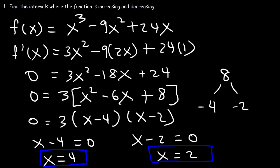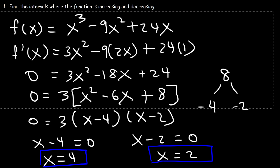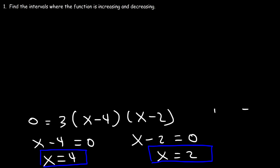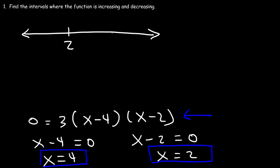Now let's make a sign chart. I want the first derivative in its factored form — it's very helpful for analyzing a sign chart. We put the critical numbers in order: 2 and 4. The multiplicity of each critical number is odd, so the signs will change across each critical number. Starting with a number greater than 4, let's try 5: 5 minus 4 is positive, 5 minus 2 is positive, and two positives multiply to a positive. So the signs alternate: positive, negative, positive.